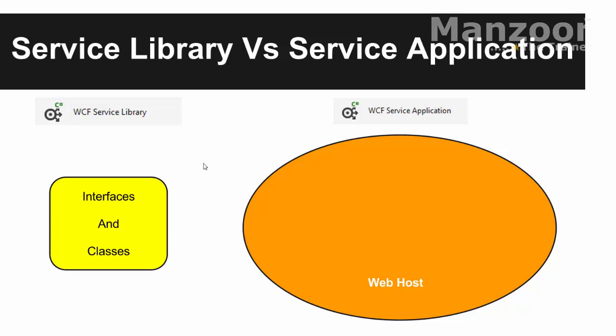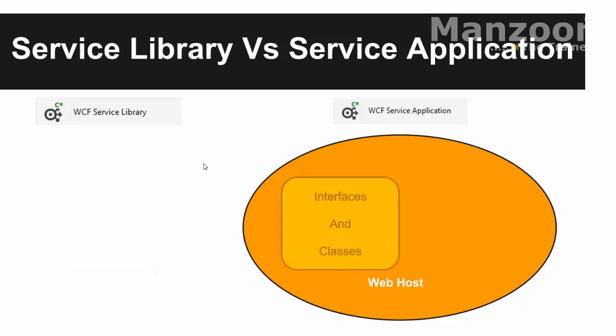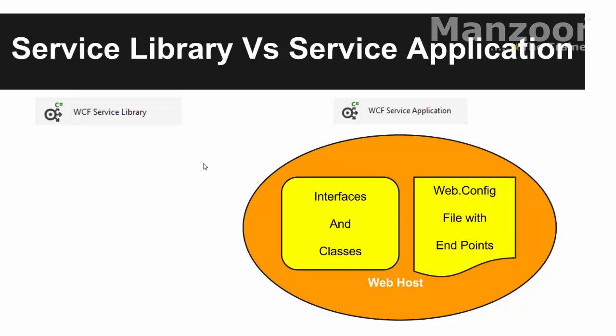The DLLs from the service library are moved into the host, and the host also has web.config information. If somebody wants to interact with this service, they should interact via the service host. The information needed for interaction is the endpoints, which are available in the web.config file. So the service application contains information about the endpoints in web.config, while the service library contains the interfaces and classes.